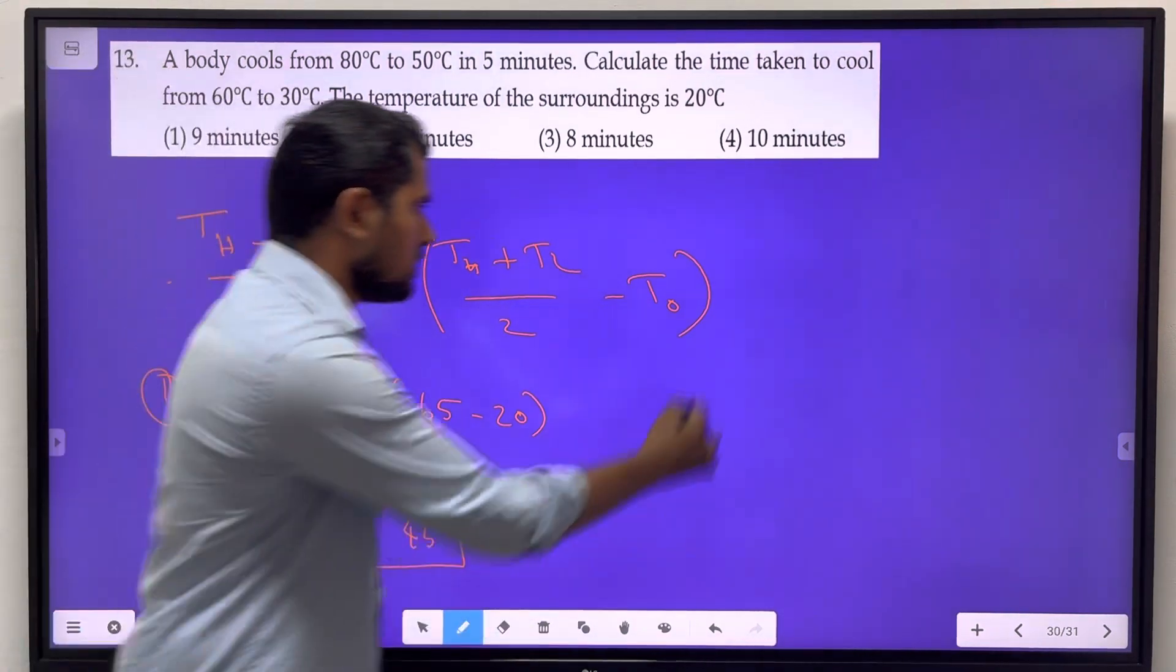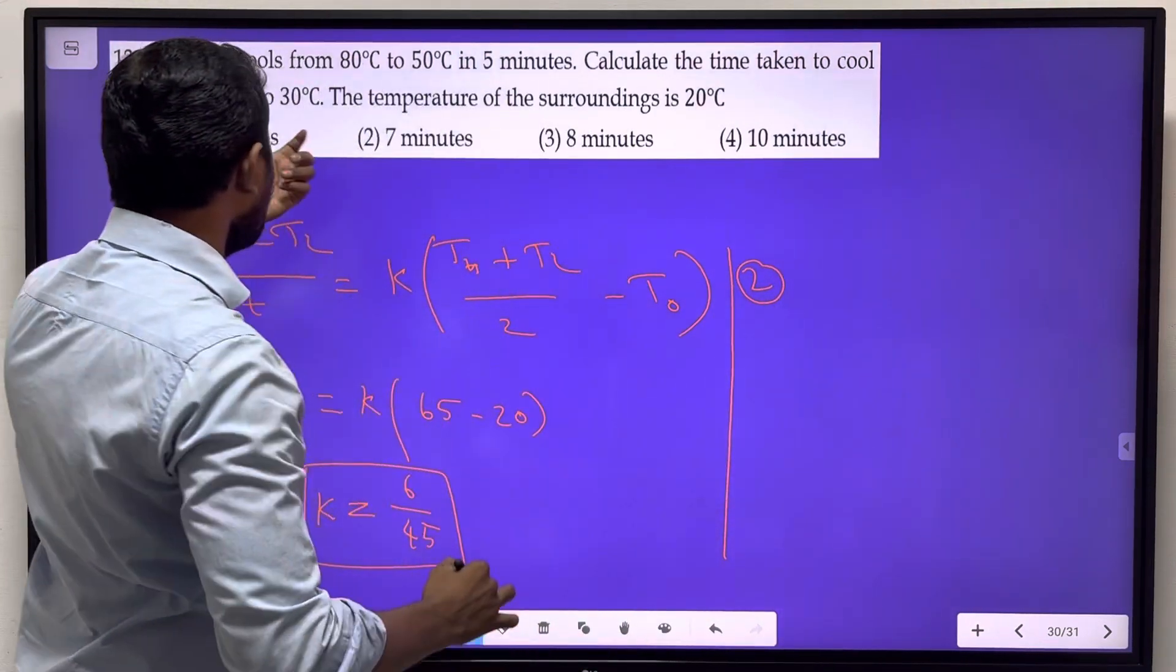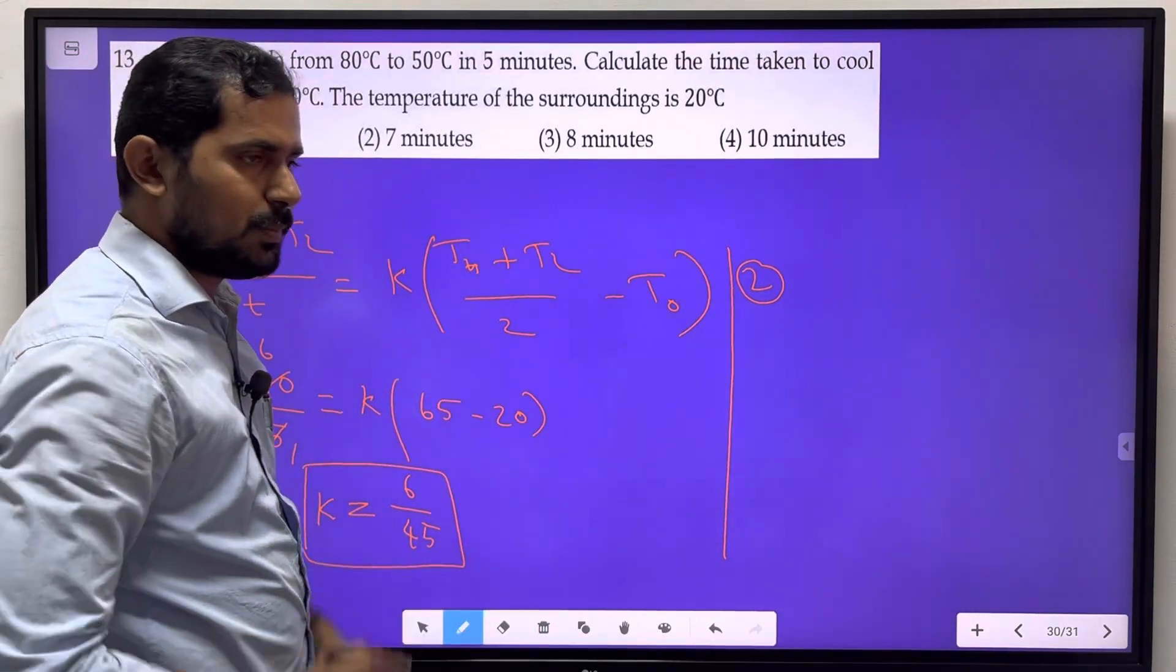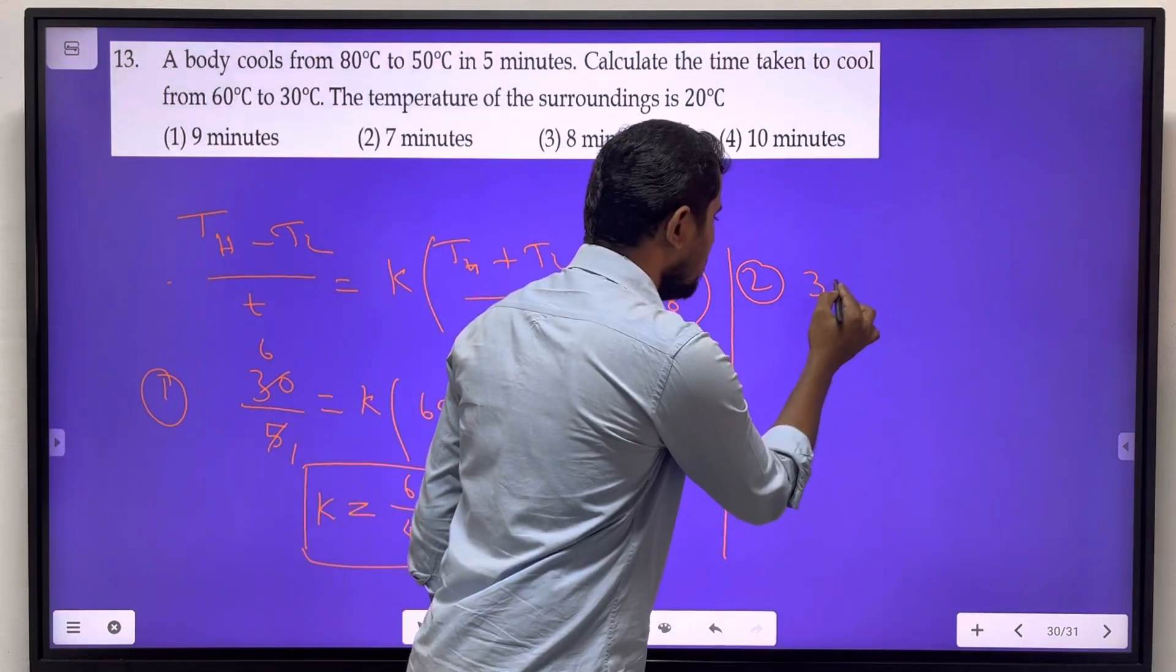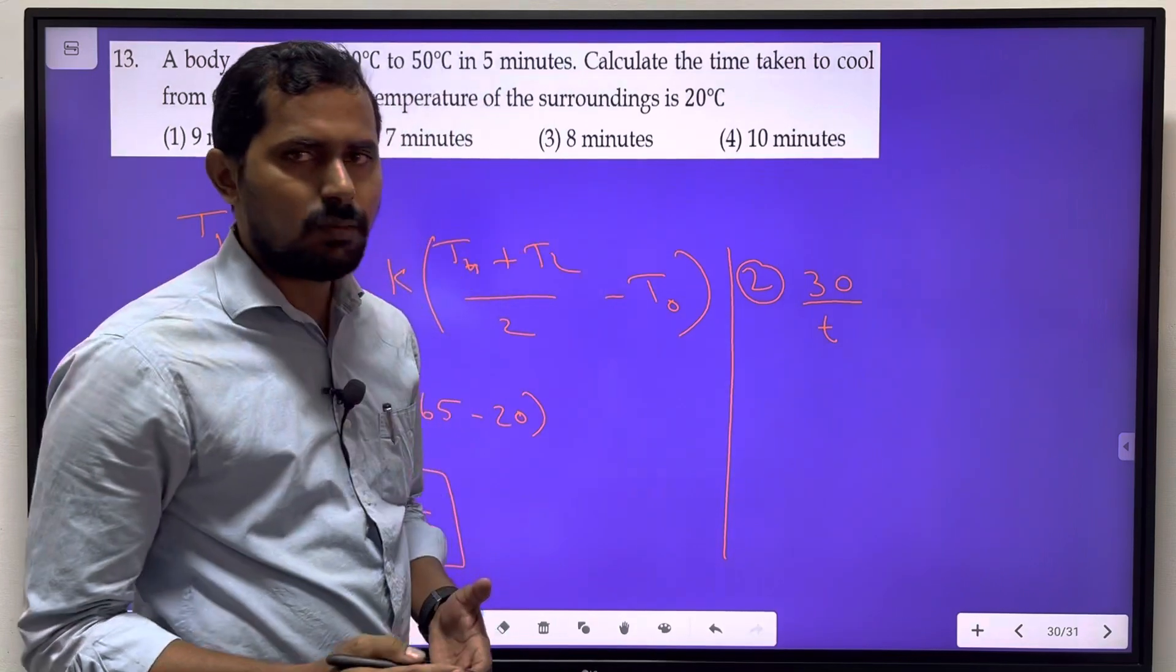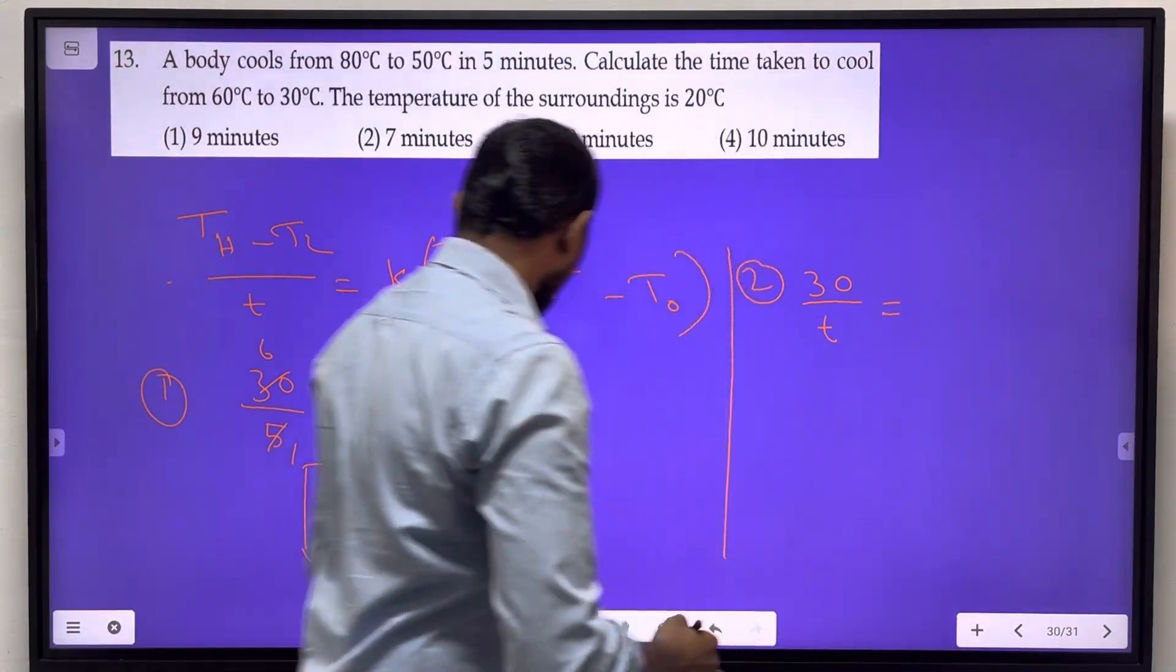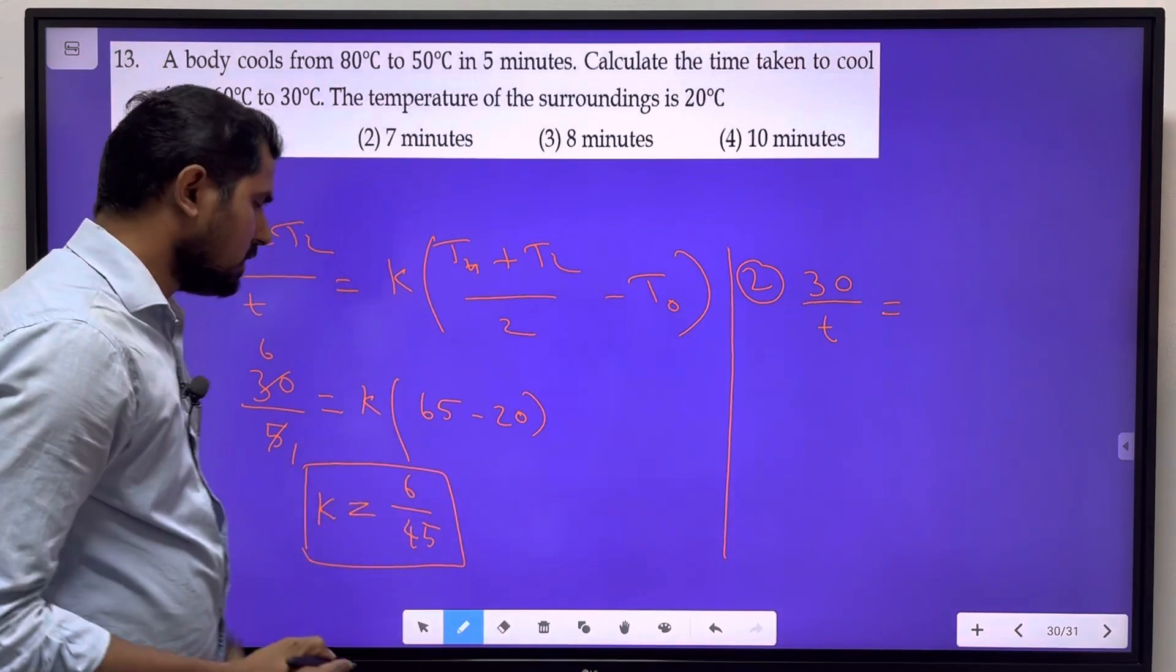In the second situation, we have 60 degrees Celsius to 30 degrees Celsius. The temperature difference is again 30. So 30 divided by time period equals K value, which we found to be 6/45.